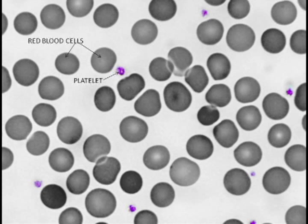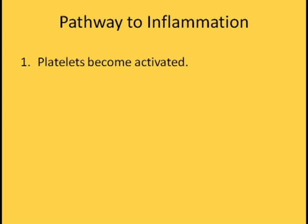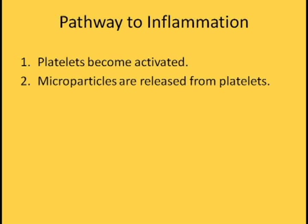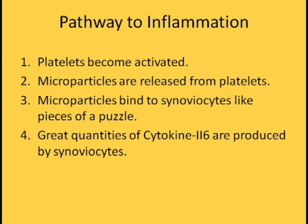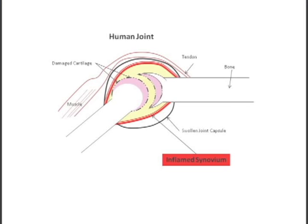Platelets are cells found throughout the body and have long been known to aid in wound repair. The process by which platelets are shown to cause inflammation can be broken down into four simple steps. Step 1: platelets become activated. Step 2: microparticles are released from platelets. Step 3: microparticles bind to synoviocytes like pieces of a puzzle. And Step 4: great quantities of cytokine 2-6 are produced by synoviocytes, which then goes on to cause inflammation in the synovium.